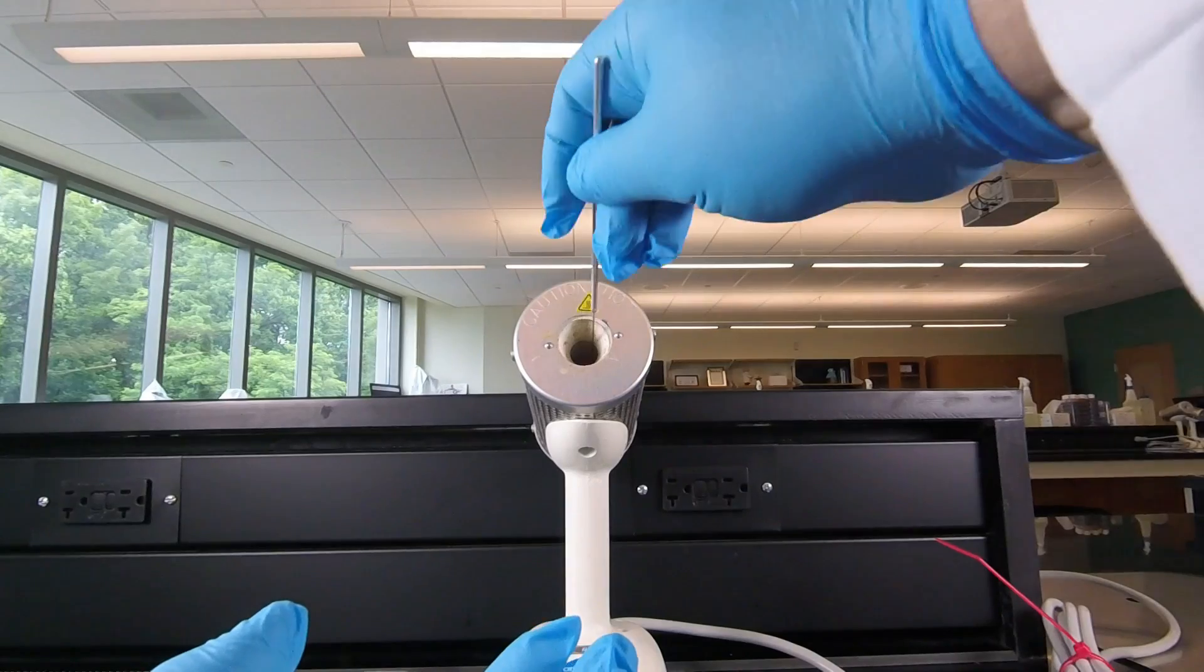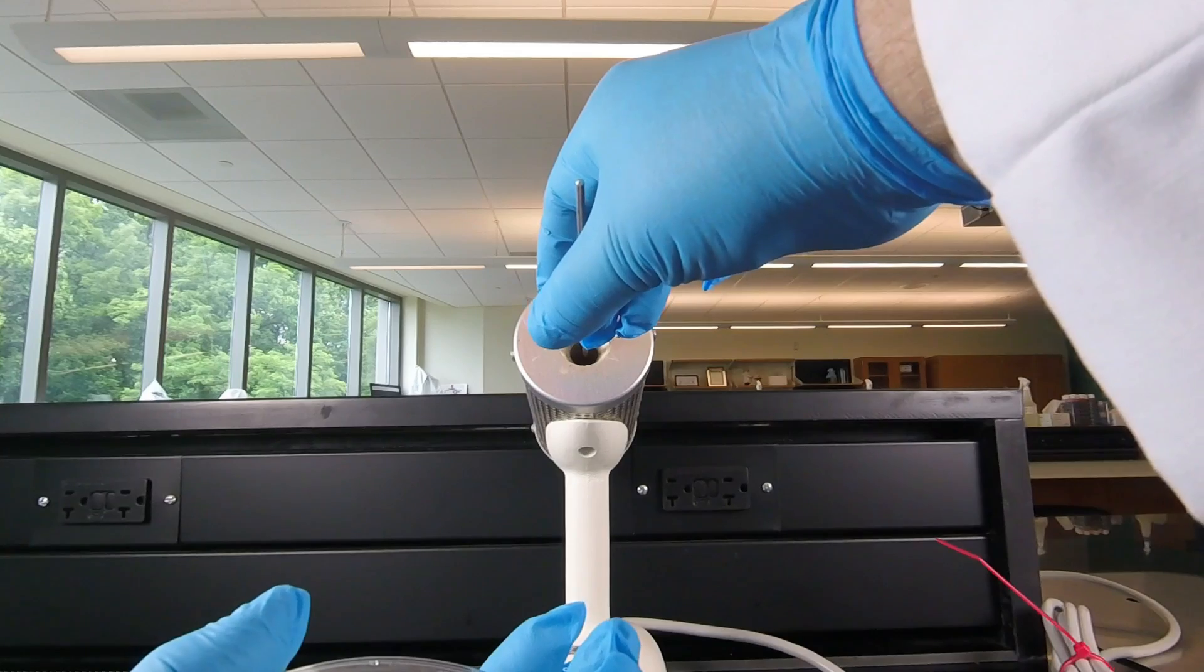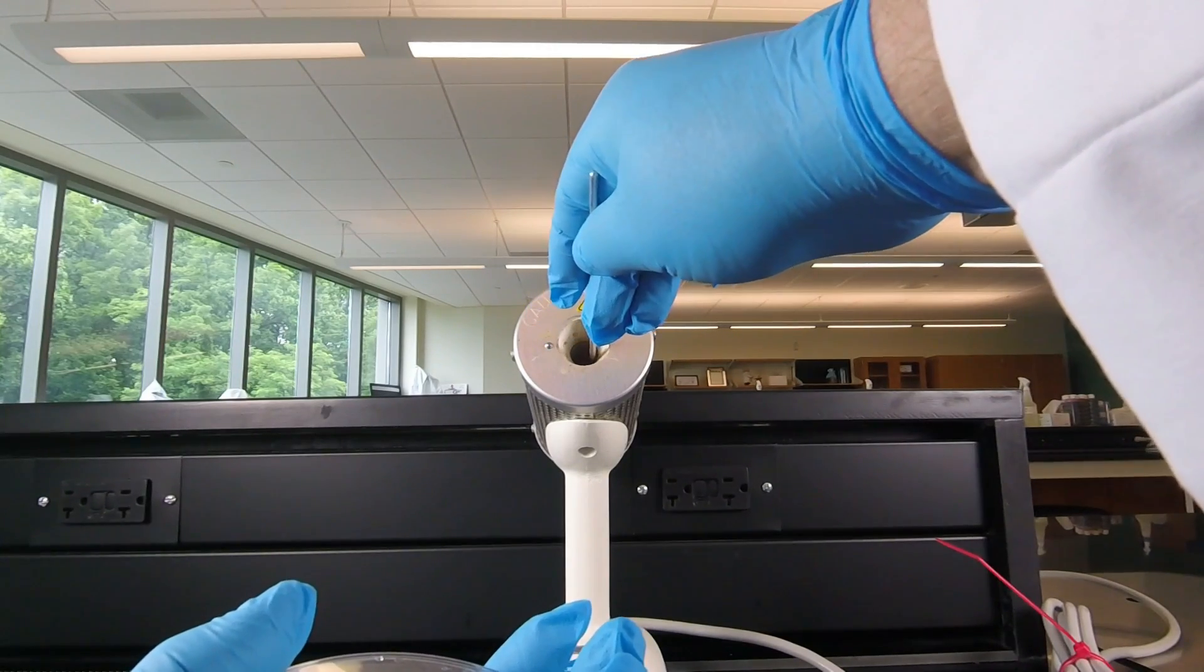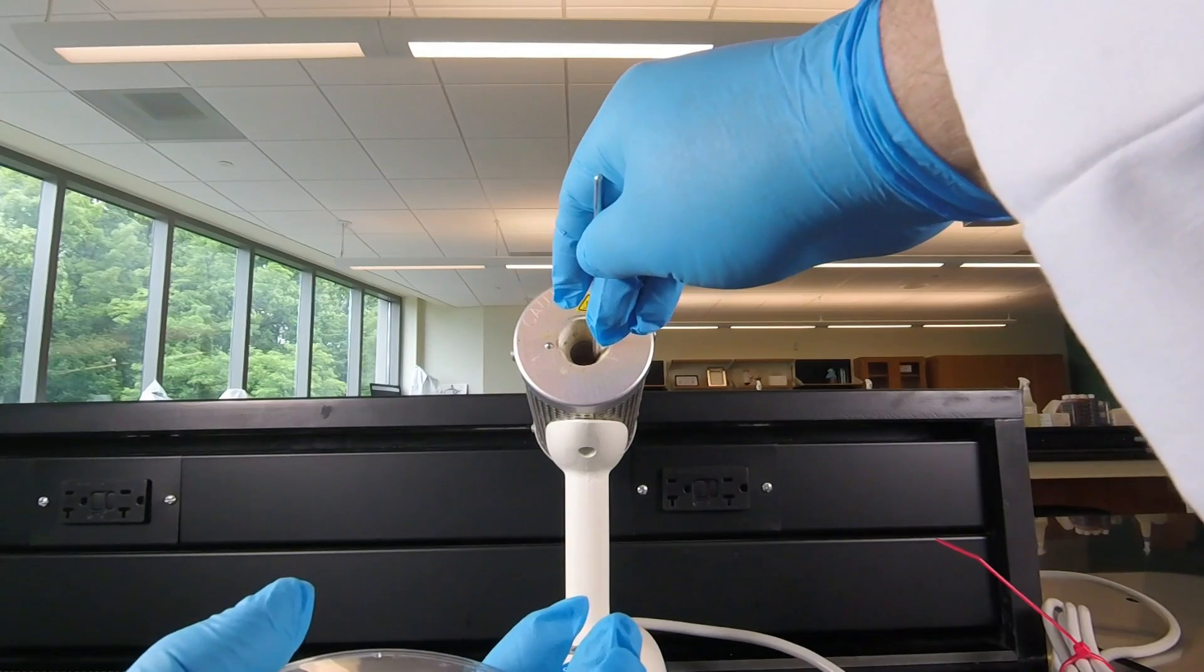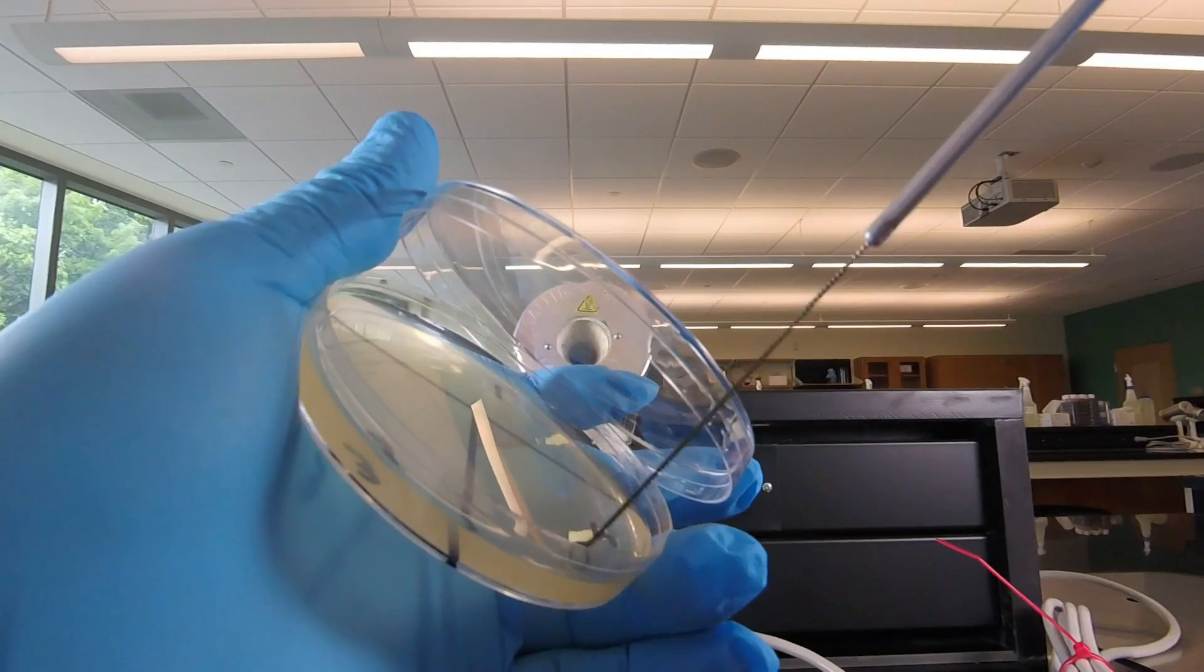Then we're going to sterilize the inoculating loop by putting it in the Bacti-cinerator for 10 seconds. Then we cool the loop by sticking it in the agar at the very edge.